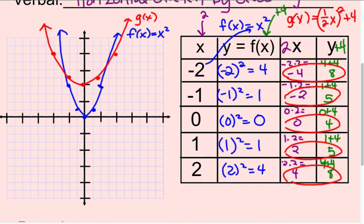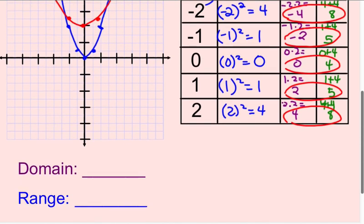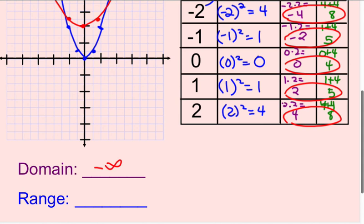Let's identify the domain and range. The domain is going to be all real numbers. So from negative infinity to positive infinity, every number on the x-axis exists. And for the range, here is on the y where it starts at 4. So y is going to be greater than or equal to 4.